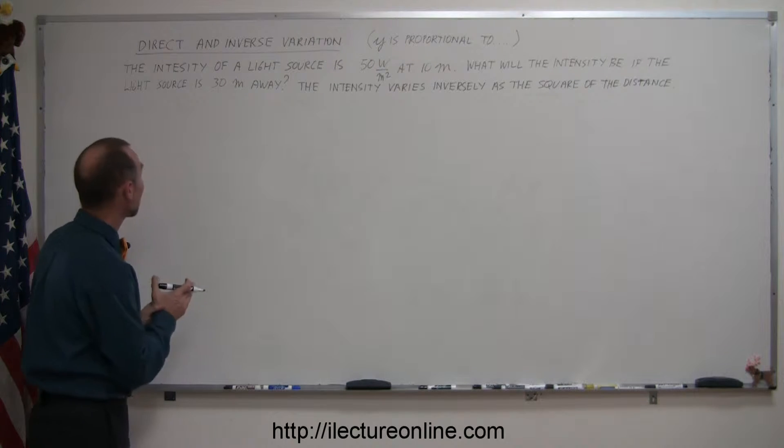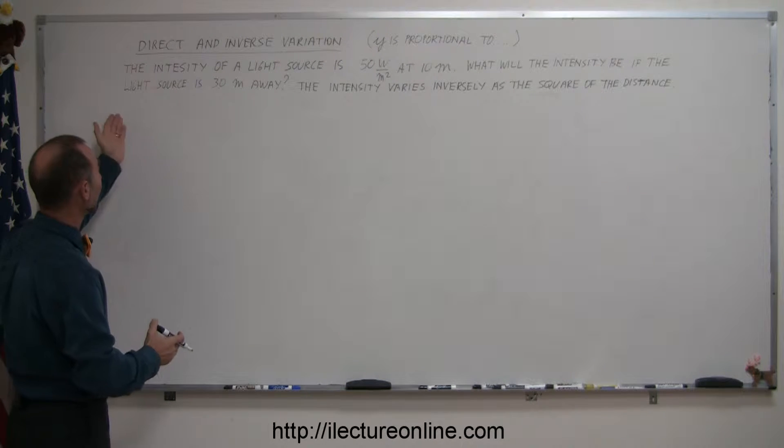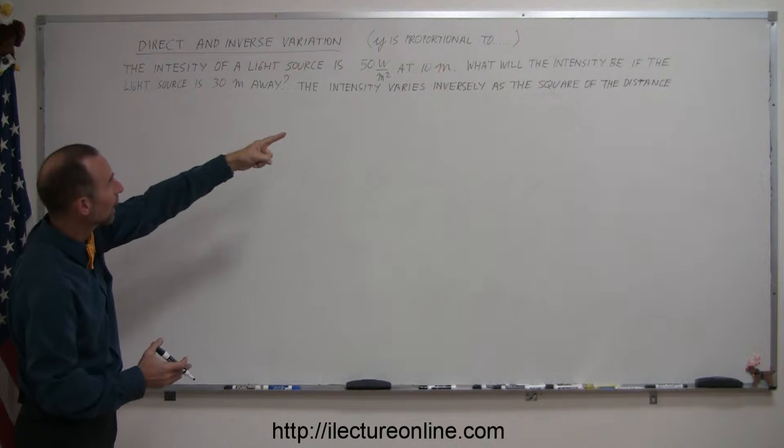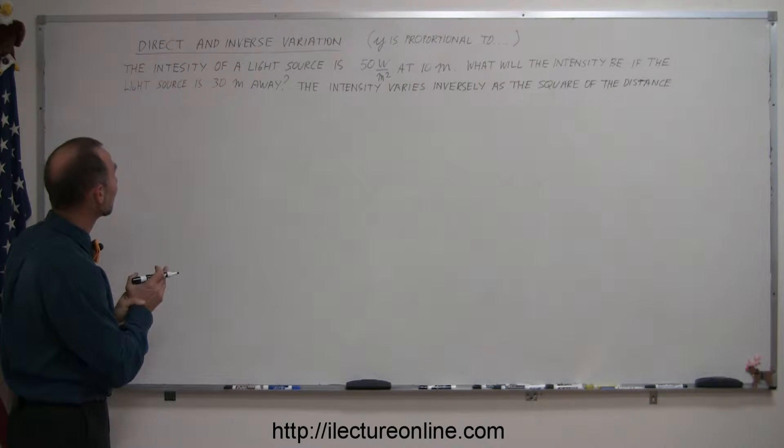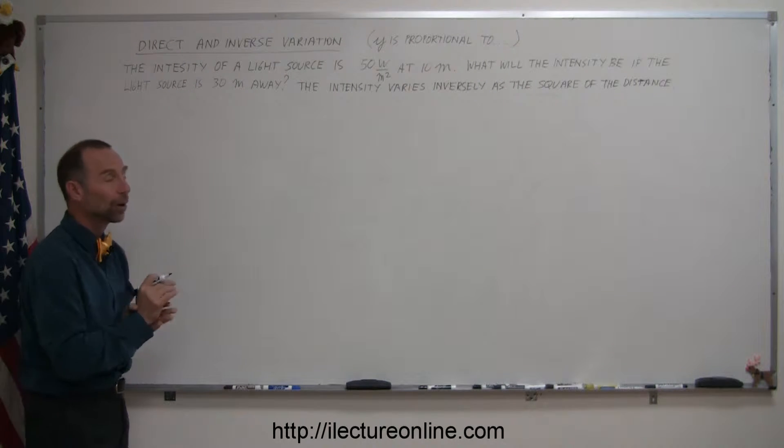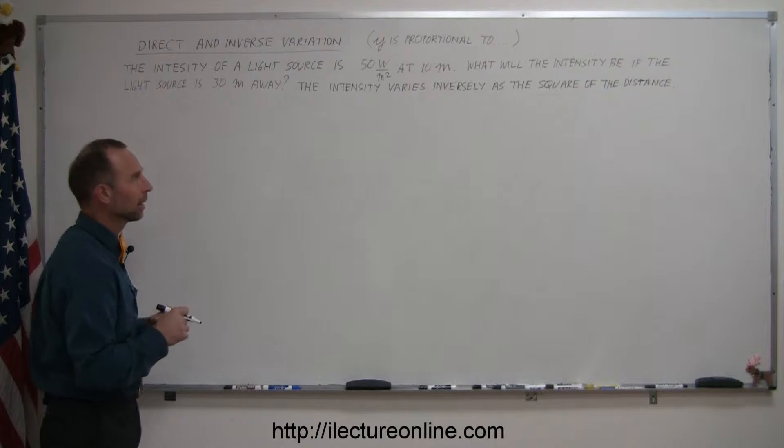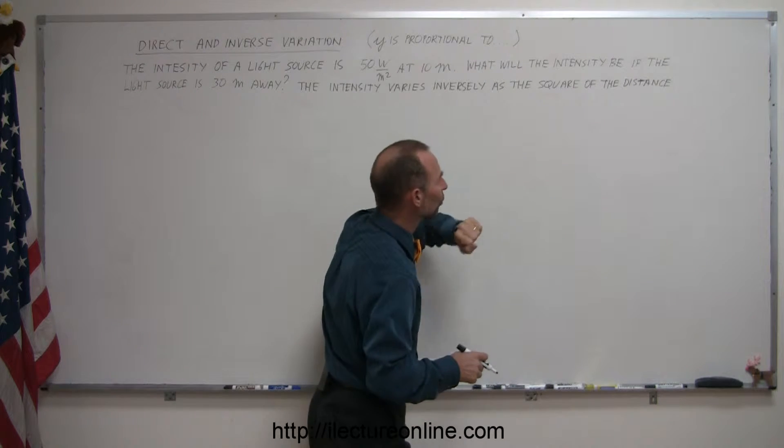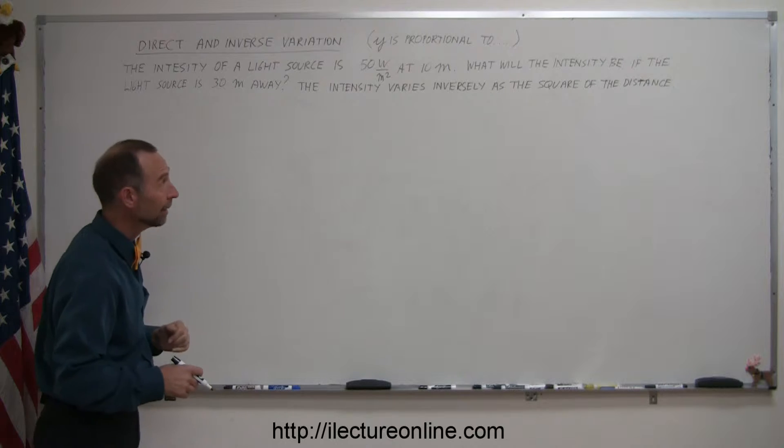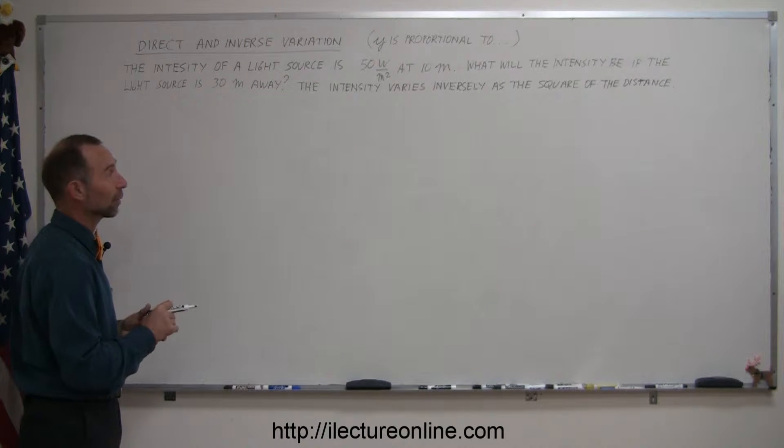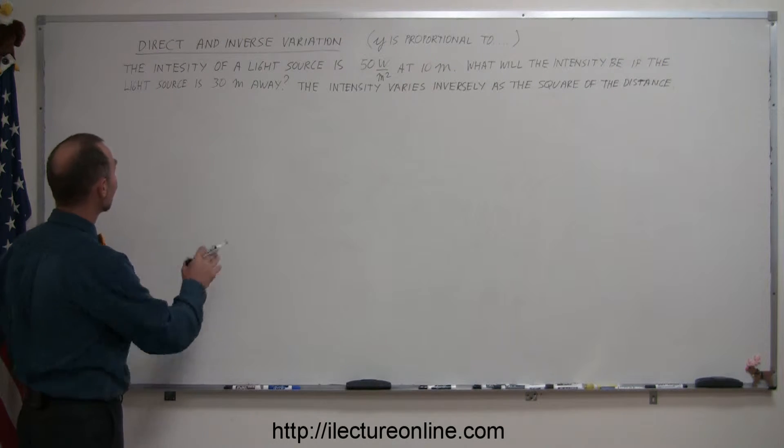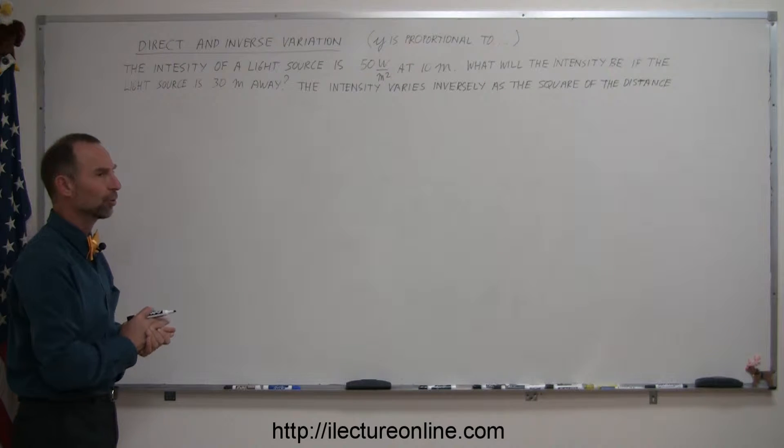And here we're dealing with a problem where we have a light source. The light source is 10 meters away, and at 10 meters it gives you an intensity of 50 watts per square meter. They tell us that the intensity varies inversely as the square of the distance. And they now also want us to figure out what the intensity will be if the light source is placed 30 meters away.